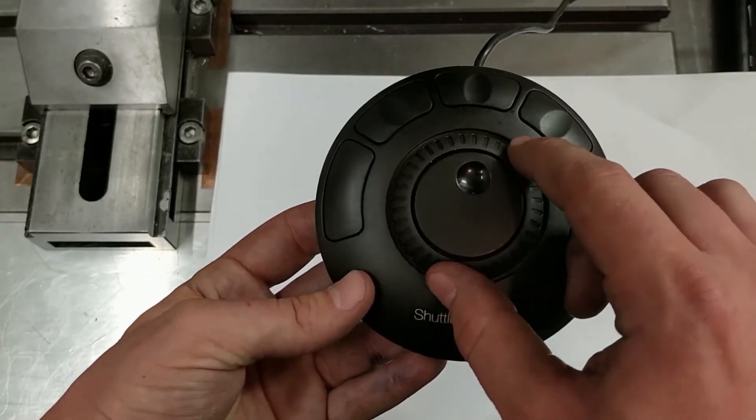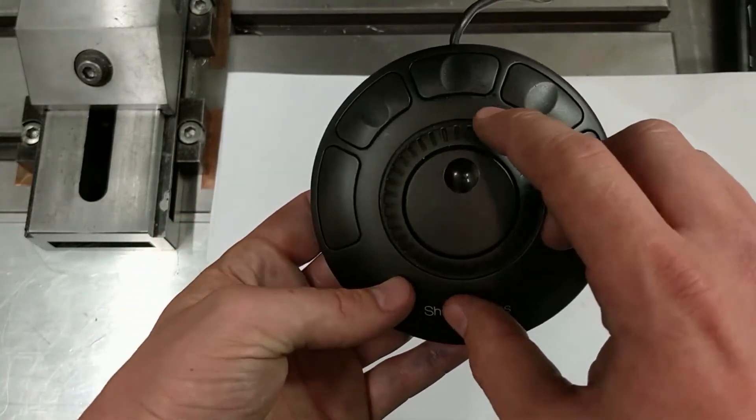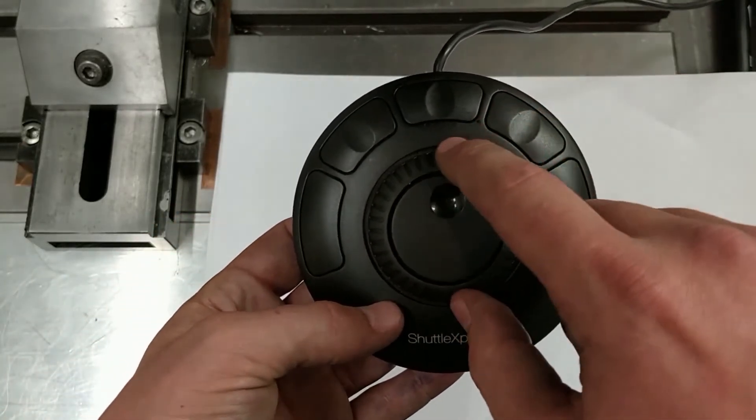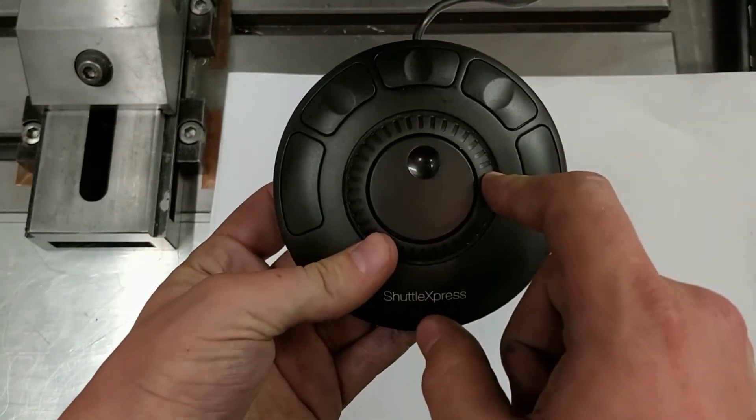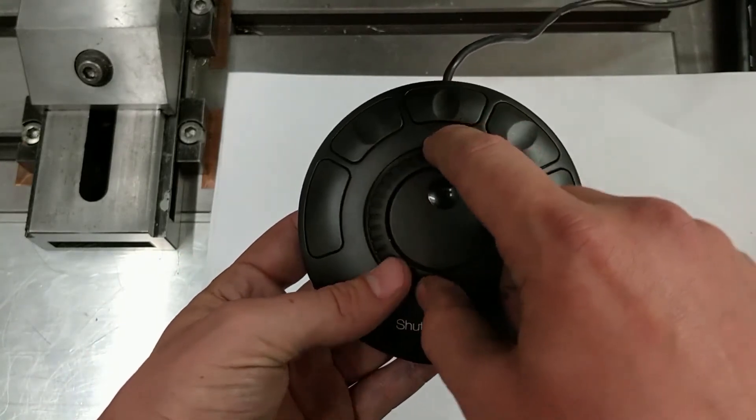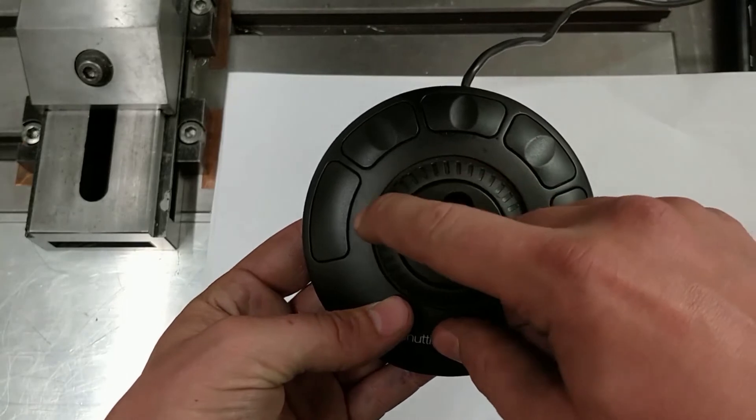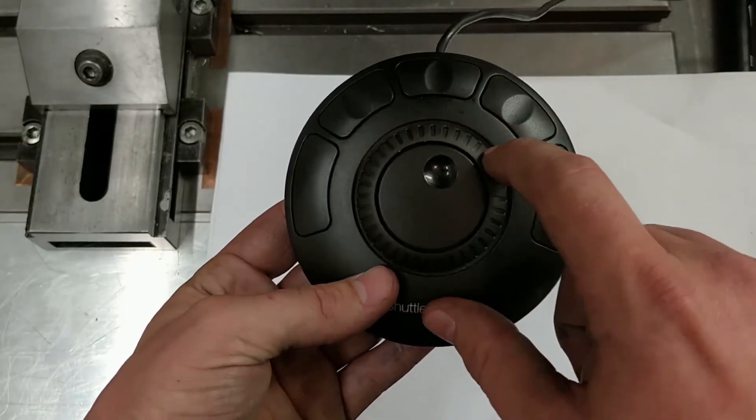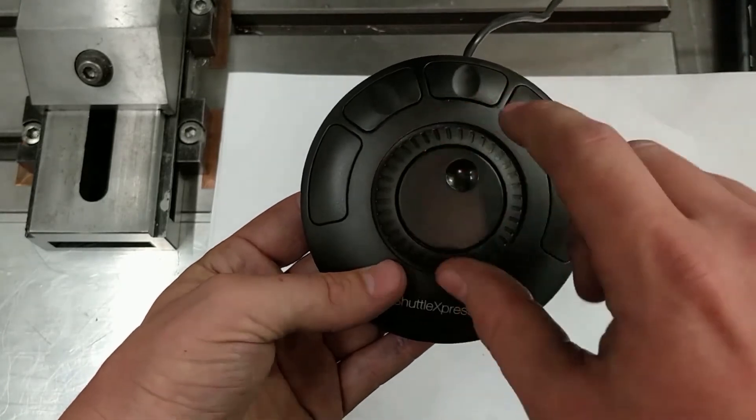And this outer wheel is called shuttle wheel or spring wheel. Because I can turn it nearly 90 degrees to the right and 90 degrees to the left. And if I release it, it always springs back to the zero position.